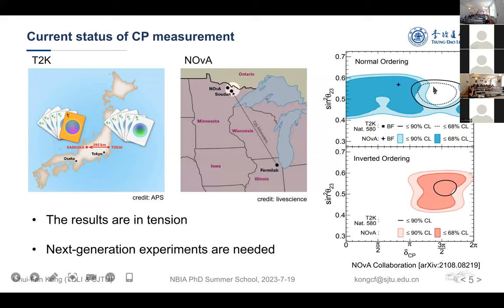From the right panel, we can see the current status of the best fit results are in tension for these two experiments. We can see the black square points, and this black cross is in tension with each other. We need the next generation experiments to precisely measure the Dirac CP phase in the future.